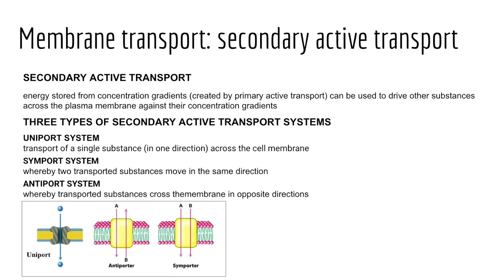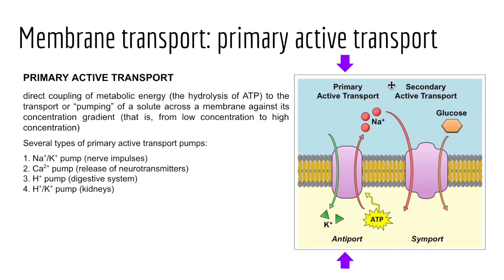In secondary active transport, the energy stored in the form of an ion concentration gradient — created as a result of primary active transport such as the sodium-potassium pump — can then be used to drive other substances across the plasma membrane against their concentration gradients using a co-transport protein. This can occur via symport systems, whereby two substances are transported in the same direction, or by antiport, where transported substances cross the membrane in opposite directions. We don't rely on ATP for such transport; rather, we use sodium as a driving force. Sodium wants to flow back along its concentration gradient, and as it moves back in, it pulls something in with it.